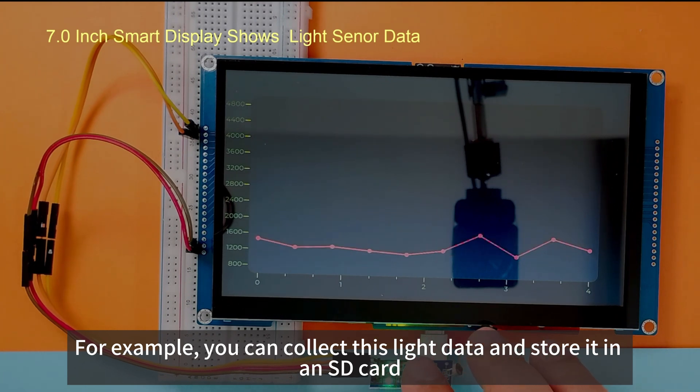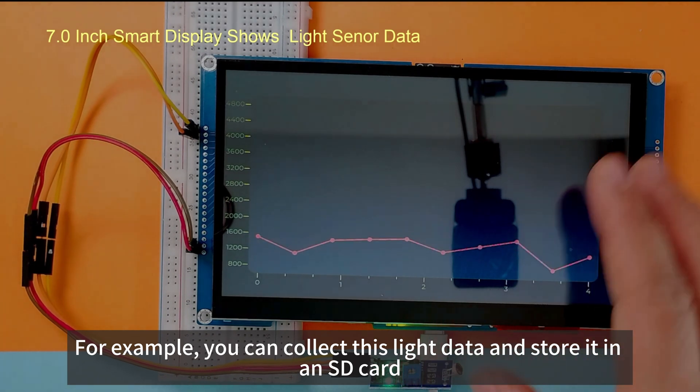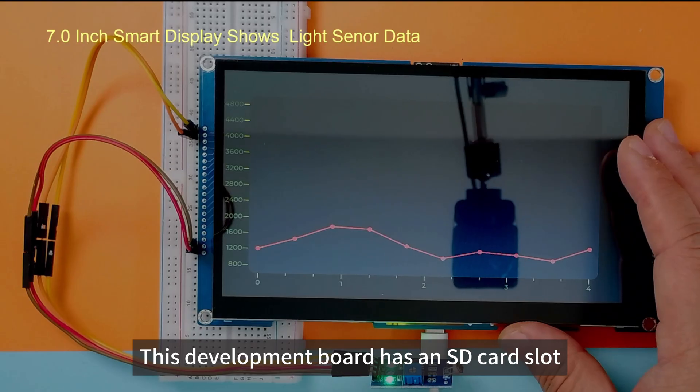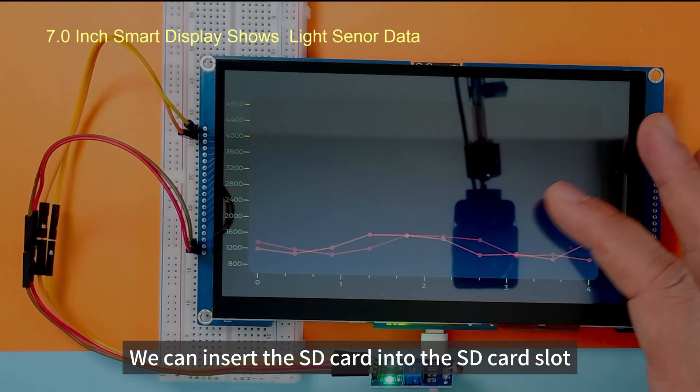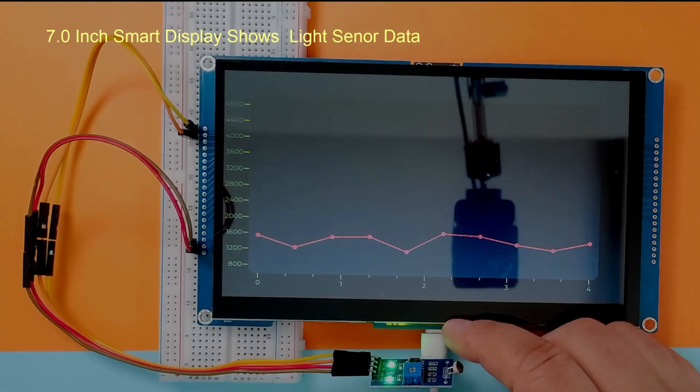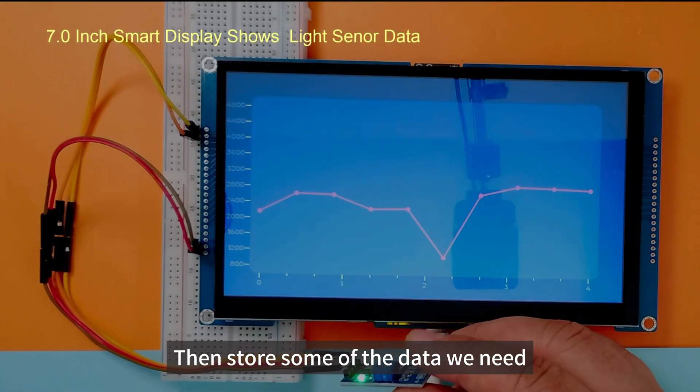For example, you can collect this lighting data and store it in an SD card. This development board has an SD card slot. We can insert the SD card into the SD card slot. Then store some of the data we need.